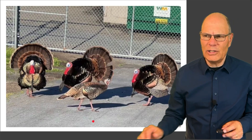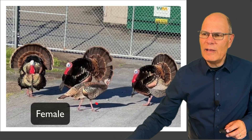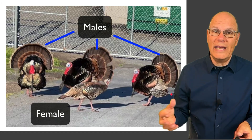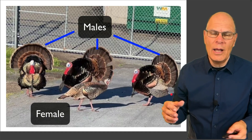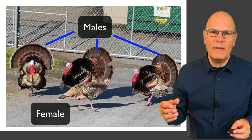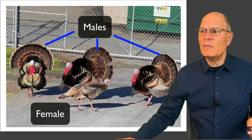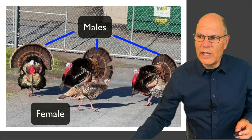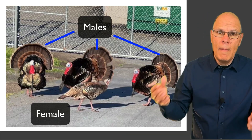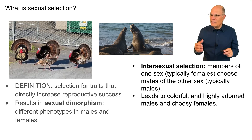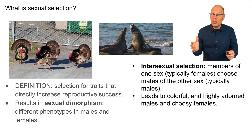Here's a photograph taken near my home. This is a female turkey with a bunch of male turkeys displaying to her. Through their movements and extension of their tail feathers, they're essentially saying, 'I'm really attractive, you should mate with me.' There's been selection for these tail feathers, features like wattles, and the male's behavior. Peacocks are a species where this has been carried to extraordinary lengths, typically leading to colorful, highly adorned males and choosy females.